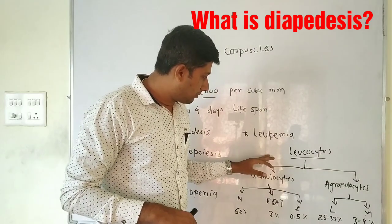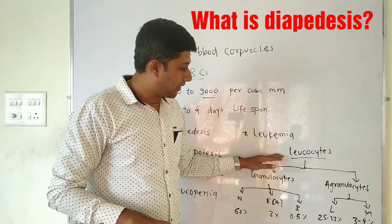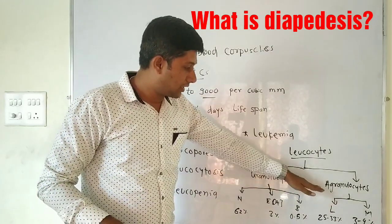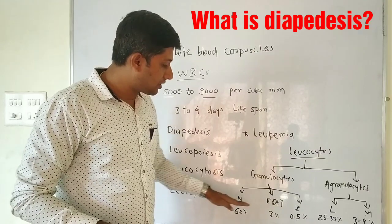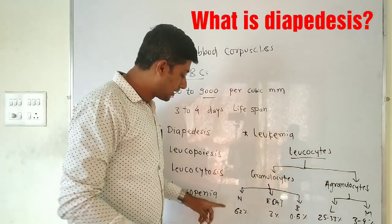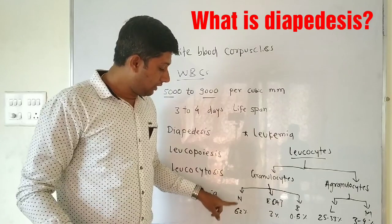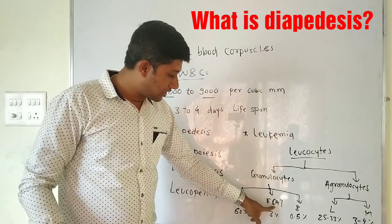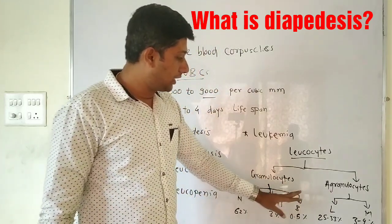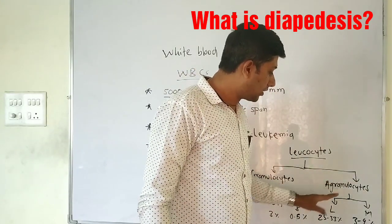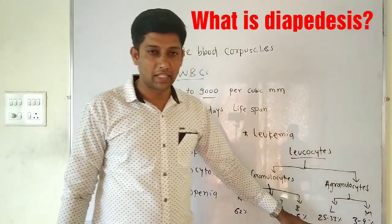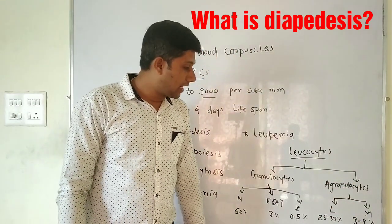The classification of leukocytes, as given in the state board book: WBCs are classified into two types — granulocytes and agranulocytes. Granulocytes are divided into neutrophils (62%), eosinophils or acidophils (3%), and basophils (0.5%). Agranulocytes are divided into lymphocytes, which constitute 25 to 33%, and monocytes, which constitute 3 to 9%.